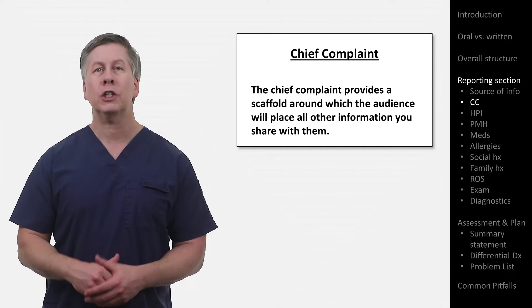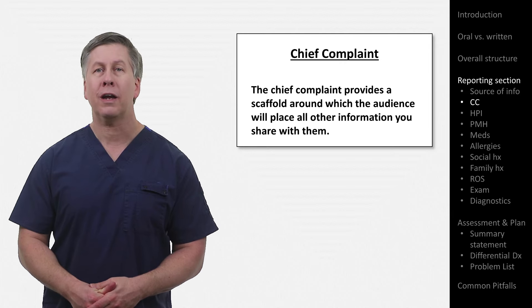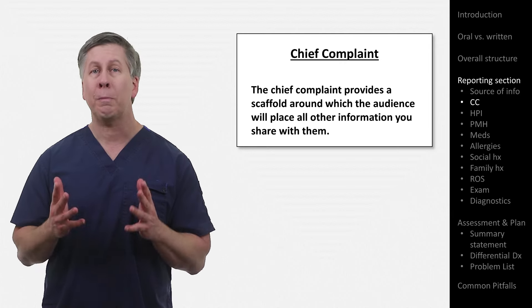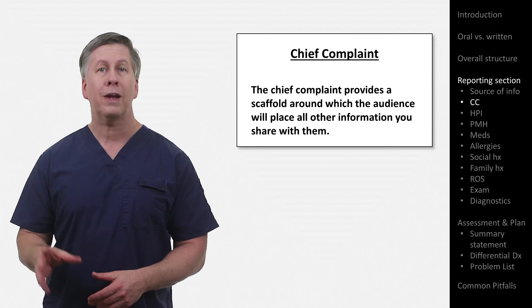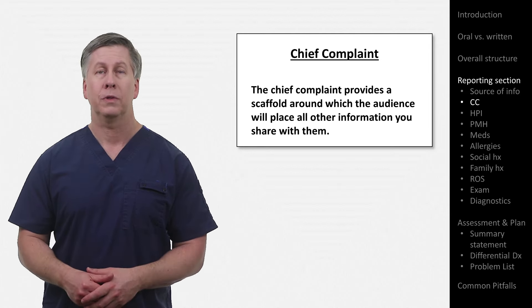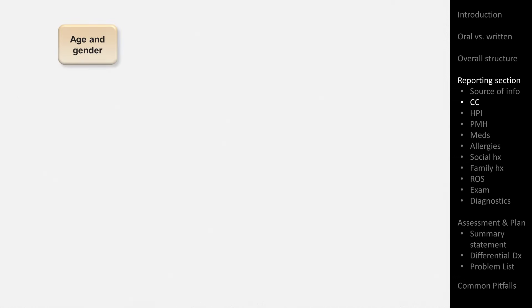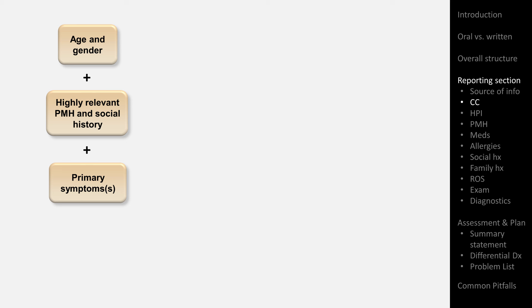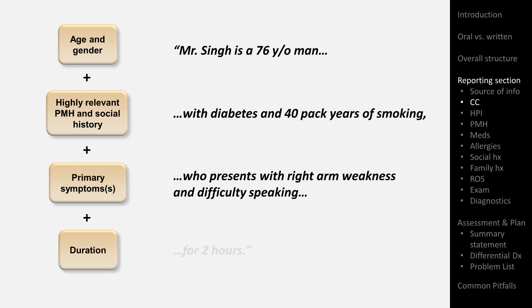For a patient with abdominal pain, the prioritization of subsequent information from the history and exam will look different for a 30-year-old previously healthy woman than it will for a 70-year-old man with colon cancer. To acknowledge this, my recommended format consists of four components: age and gender, highly relevant past medical and social history, the primary symptom or symptoms, and the duration. So, for example, 'Mr. Singh is a 76-year-old man with diabetes and 40-pack years of smoking who presents with right arm weakness and difficulty speaking for two hours.'